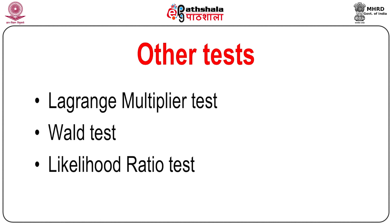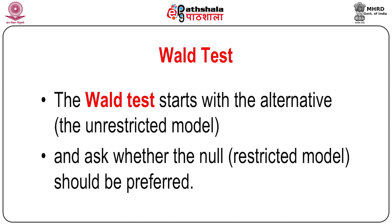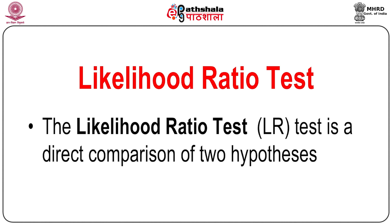Other tests include the Lagrange Multiplier Test, the Wald Test, and the Likelihood Ratio Test. For the Lagrange Multiplier Test, estimate the restricted model, compute residuals eᵢ, regress eᵢ on all regressors, and nR² follows a chi-square distribution with m degrees of freedom (m = number of restrictions). If nR² exceeds the critical value, reject the restricted model. The Wald Test starts with the unrestricted model and asks whether the restricted model should be preferred. The Likelihood Ratio Test is a direct comparison of the two hypotheses.